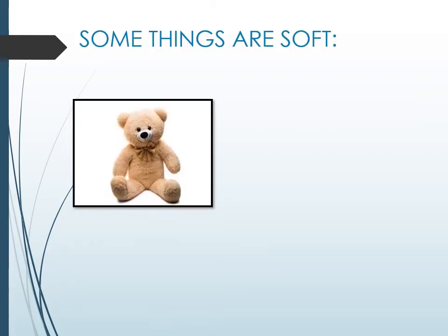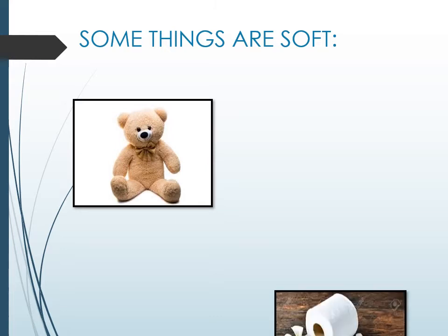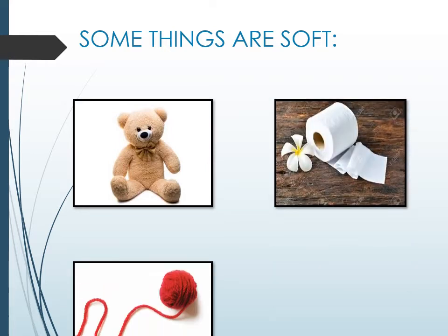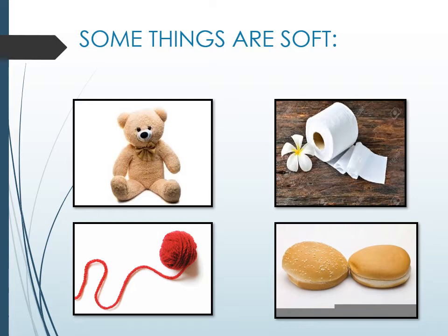Some things are soft, like a teddy bear, tissue paper, wool, and burger buns. These are soft objects. You can find in your environment there are a lot of soft objects like your pillow and many other things as well.